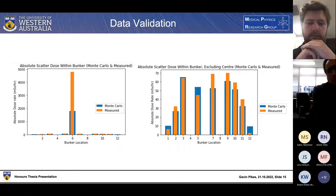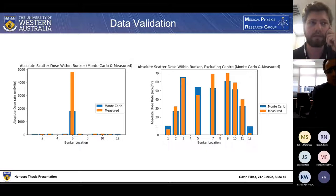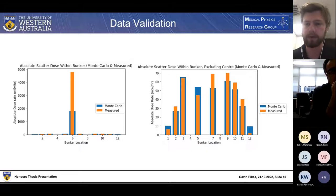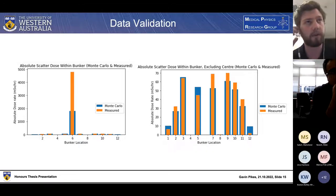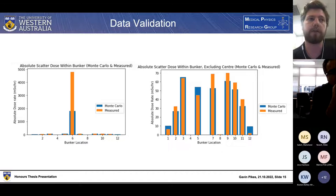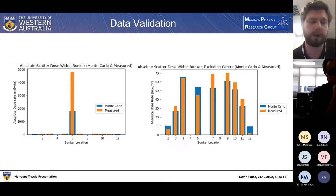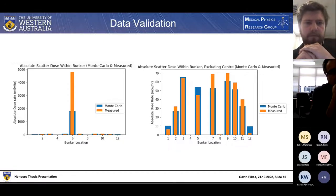A follow-up question asks whether the maze entrance dose rate calculations used a fixed beam direction or sampled from multiple directions. The measured results used the beam going directly downward. The simulated measurements of dose at the maze entrance used the beam at 0, 90, 180, and 270 degree positions, simulating the proper use factor of 0.25 for each of the four directions.